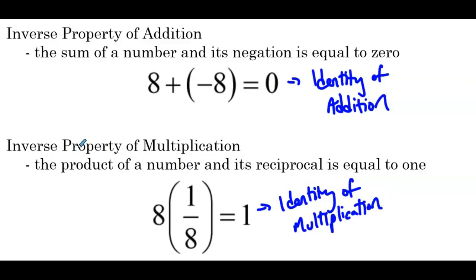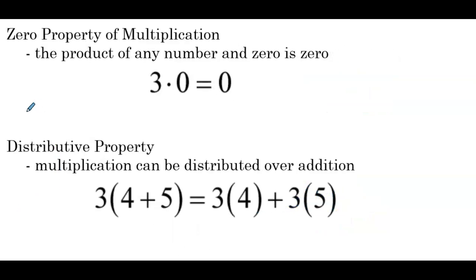This is important because now we see how the identity property and the inverse property are related to one another. The zero property of multiplication states the product of any number and 0 is 0 — so 3 times 0 equals 0. The distributive property states that multiplication can be distributed over addition. So 3 times the quantity of 4 plus 5 is equal to 3 times 4 plus 3 times 5, and often we illustrate this by drawing the 3 distributed in to the sum. Any number times 0 is always going to be equal to 0, and the distributive property is a way to simplify an expression.